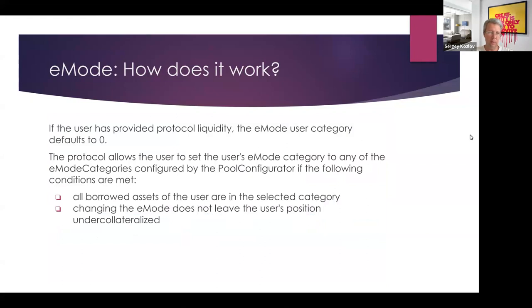I myself use this efficiency mode with wrapped stETH as collateral and an ETH loan — many people do this. The key point is that your address should only hold assets that are close in their price movement. As soon as you have something unrelated, E-mode will not work, so carefully check the E-mode categories for what you can hold as borrower and supplier assets.